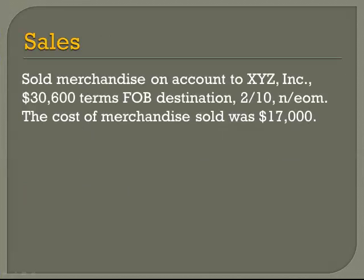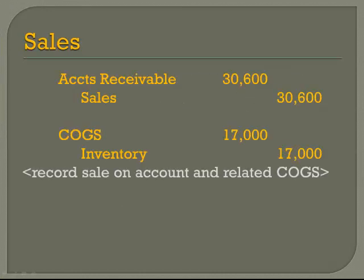So we sell this for $30,600 and that merchandise originally cost us $17,000. Our journal entry is debit accounts receivable, credit sales. We have a right to receive money from somebody because of our sale. And our cost of goods sold expense account is going up, and the inventory asset account is going down with the credit. You can just use one journal entry description to describe both of those transactions.